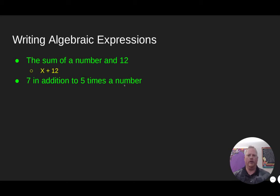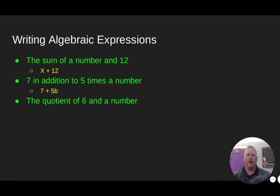'7 in addition to 5 times a number' — I'm going to take 7 and add it to five times a number, so 7 plus 5b. For the quotient, that means division. Anytime we have division, don't use the division symbol with dots — write it as a fraction. That's actually where that division symbol came from: the fraction line with a numerator and denominator. So dividing always gives us a fraction.